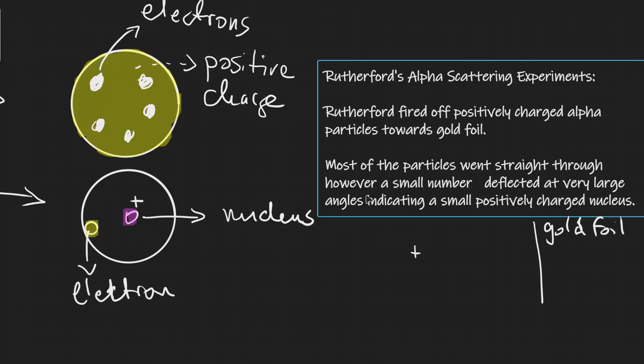He found that most of the particles went straight through. However, a small number of them actually bounced straight back and this indicated that they would have had a direct hit with a small nucleus at the center.